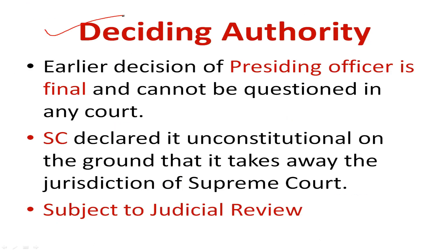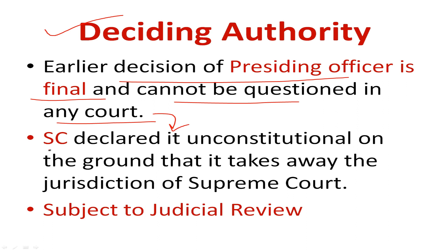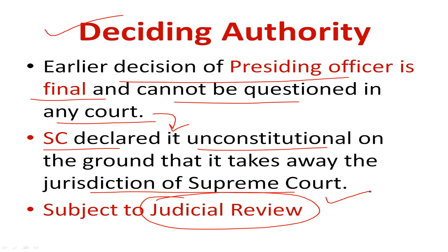Now, who decides if it is defection or not? The presiding officer — take the example of the Speaker. The decision was considered final, meaning it could not be questioned in court. But the Supreme Court said this is unconstitutional and that judicial review falls under Supreme Court jurisdiction. There is now more debate: that the power to decide on defection should include the Election Commission. As the Goswami Commission and Punchhi Commission recommendations stated, there should be improvement in the deciding authority so that the federal structure is strengthened.